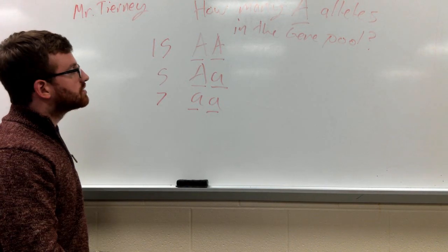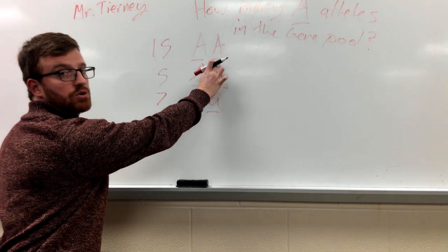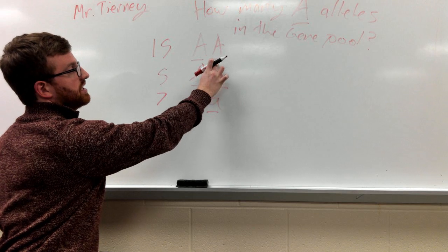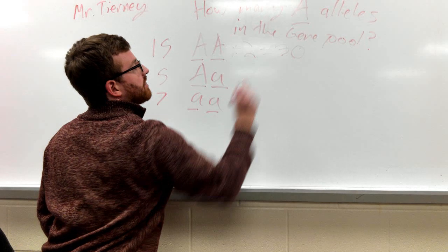Okay, so to do that, each of these organisms, all 15 of these, are homozygous dominant. They have two big A's, so you have to multiply that by two, and you're going to get 30.